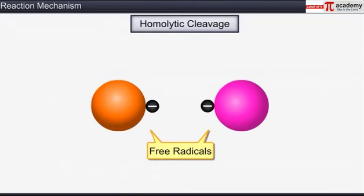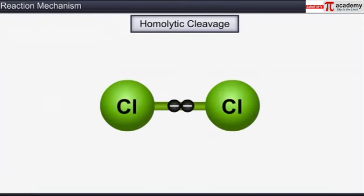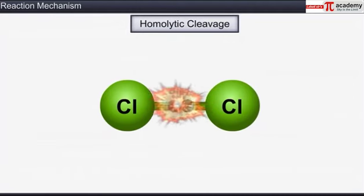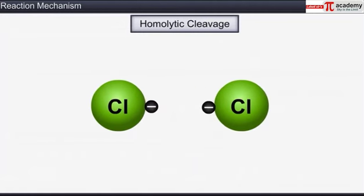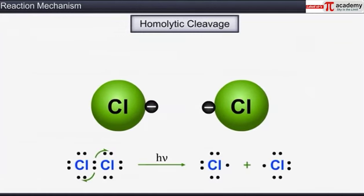Free radicals are highly reactive due to the presence of unpaired electrons. For example, the homolytic cleavage of the chlorine-chlorine bond in chlorine molecules, induced by heat or light, leads to the formation of two chlorine free radicals.